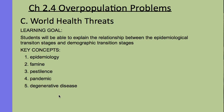This is Overpopulation Problems, Chapter 2, Key Issue 4, looking at world health threats. The learning goal is that students will be able to explain the relationship between the epidemiological transition stages and the demographic transition stages. The key concepts are epidemiology, famine, pestilence, pandemic, and degenerative disease.